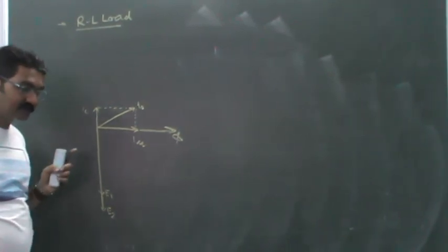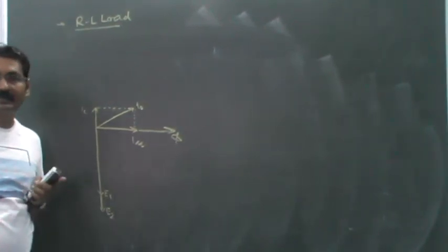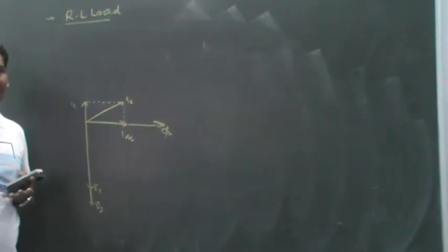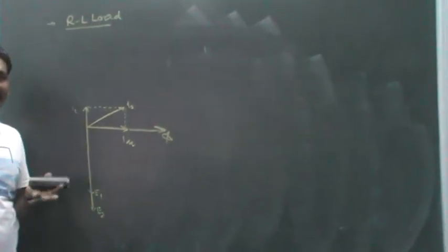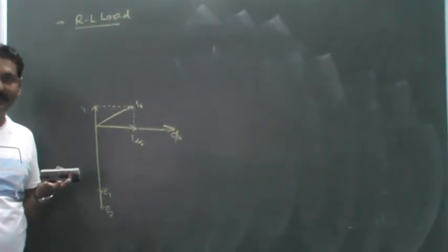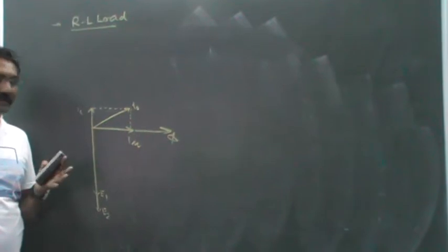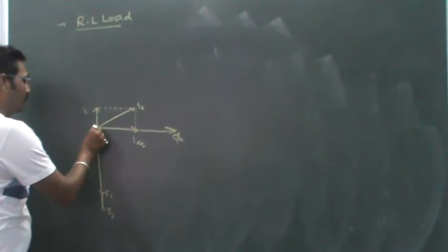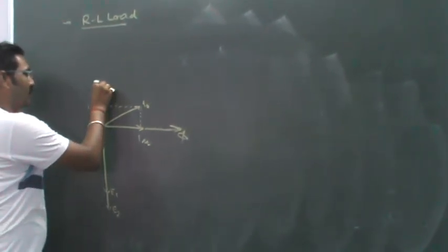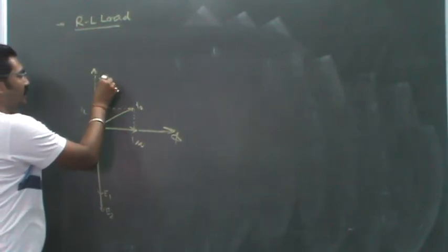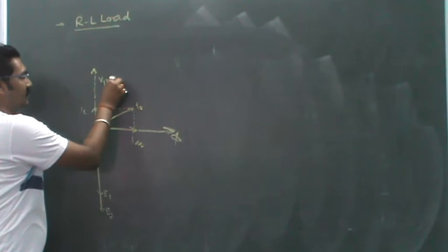At no-load condition, the I_naught current in primary is quite less—almost 3 to 5 percent of rated primary current. Since I_naught is quite less, we can assume there is no considerable drop in the primary circuit at no-load condition. So we can say E1 equals minus V1.